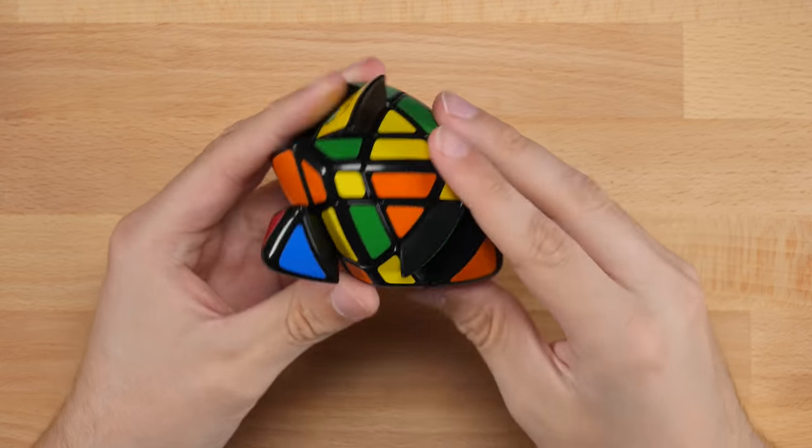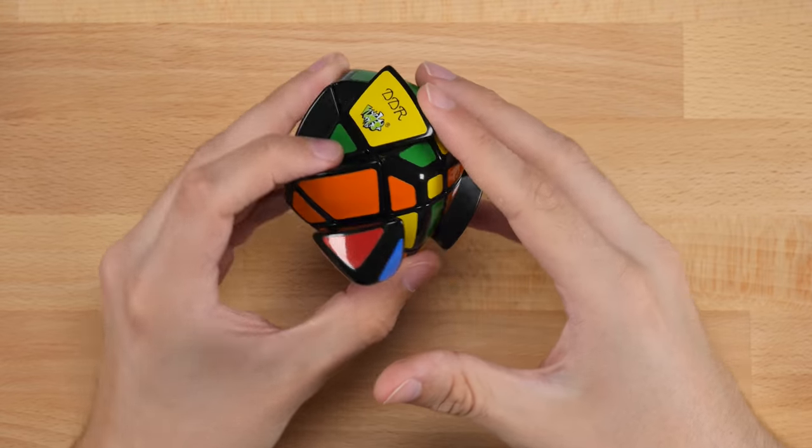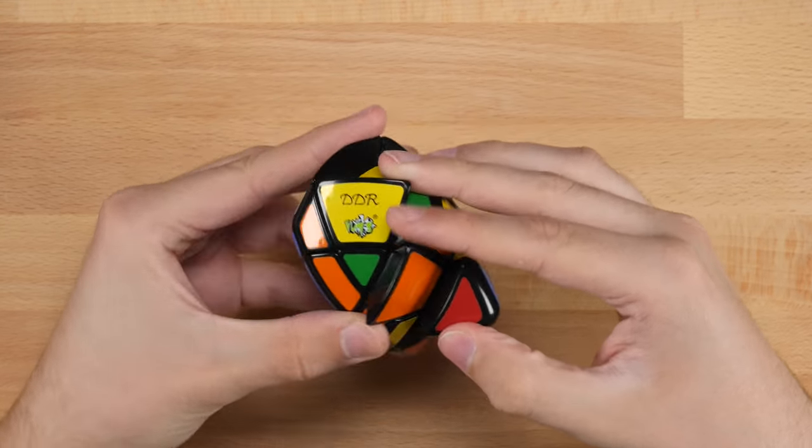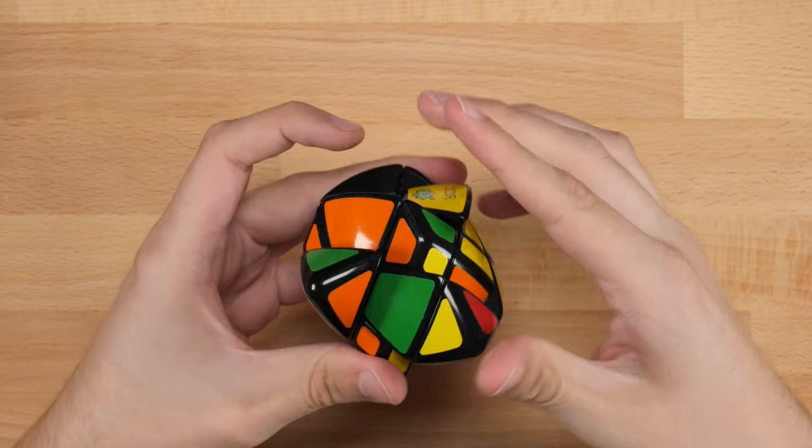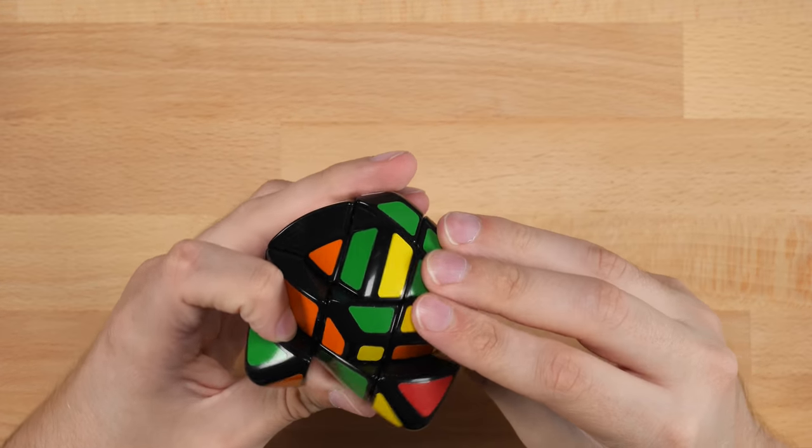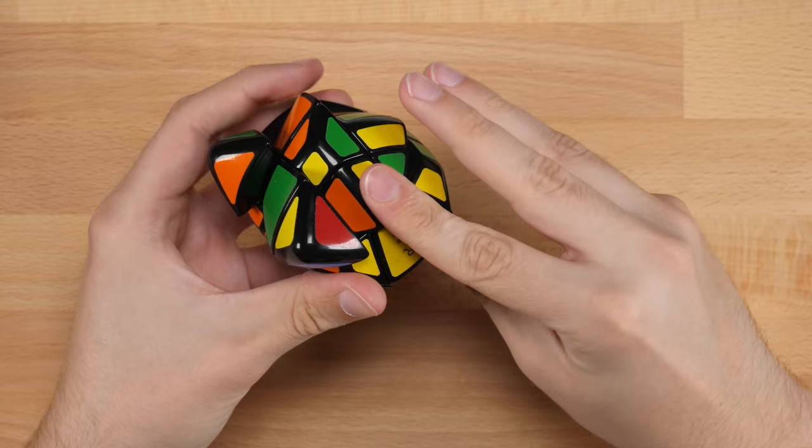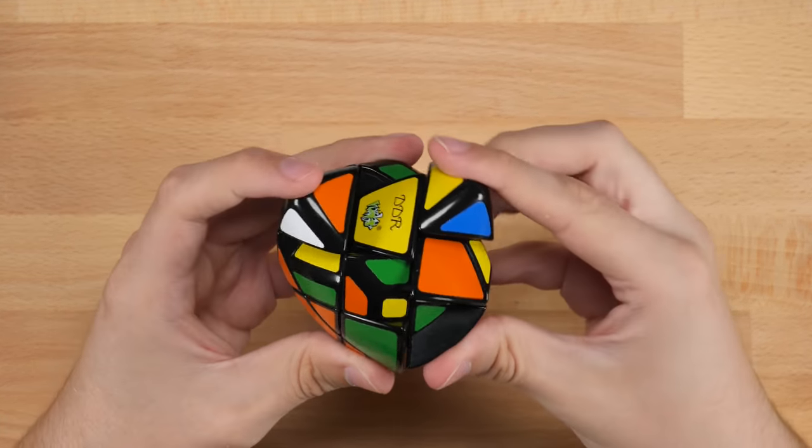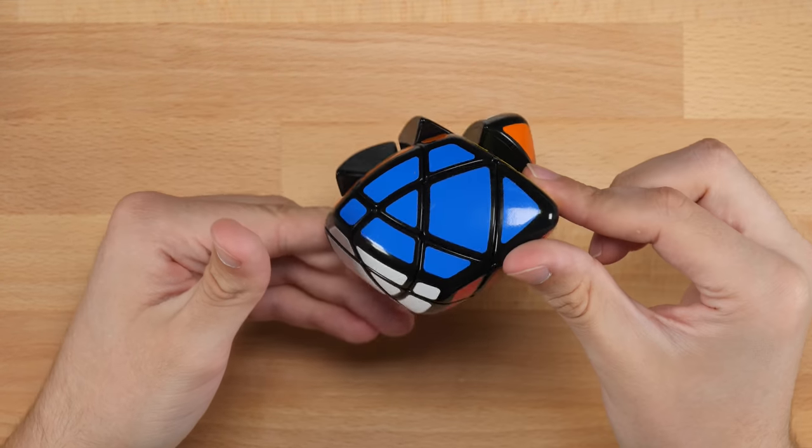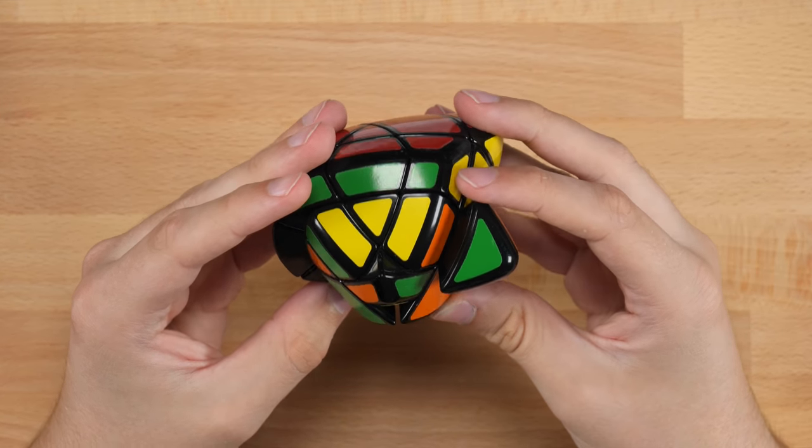We need a white corner here and then a white edge. So, we can go ahead and take this edge, pair it up, and then insert it just like that. Oops. There we go. We need a blue corner here and then a blue and orange edge. And that's already set up perfectly for an insertion. Awesome. All right. Now on to last layer.